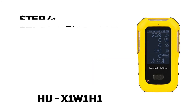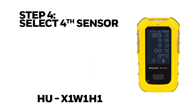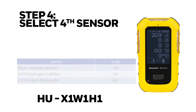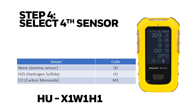Step 4: select the fourth sensor. This step is to choose a sensor for slot number 4. We also have three options here: a dummy sensor, a hydrogen sulfide sensor, and a carbon monoxide sensor. In this step I'm going to choose the code N1 for carbon monoxide.